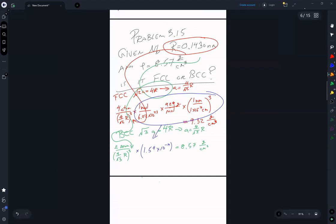So because we were given the density, we know that niobium is a body centered cubic structure.